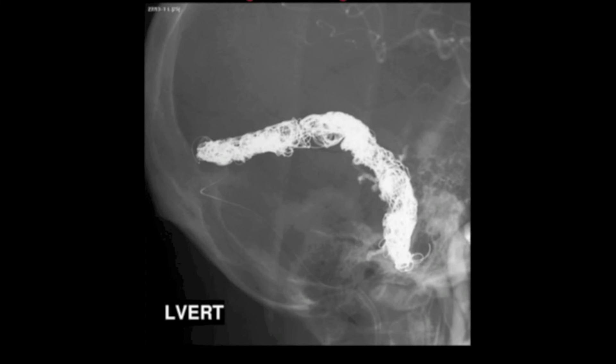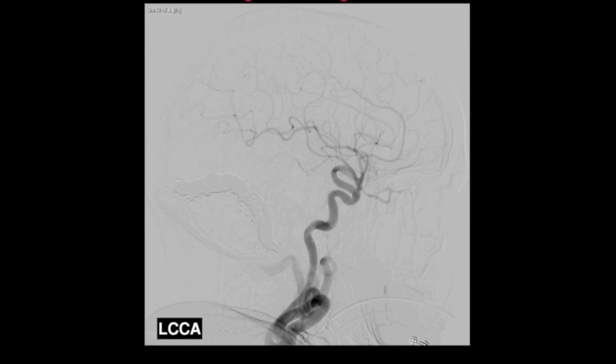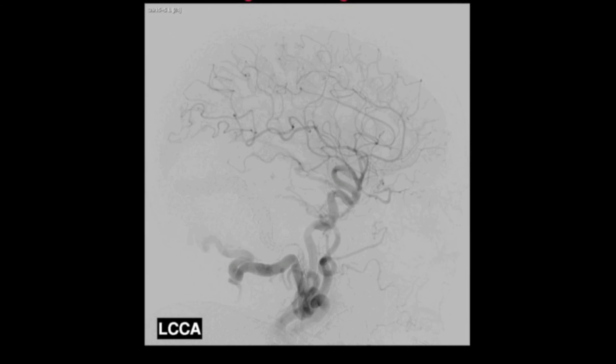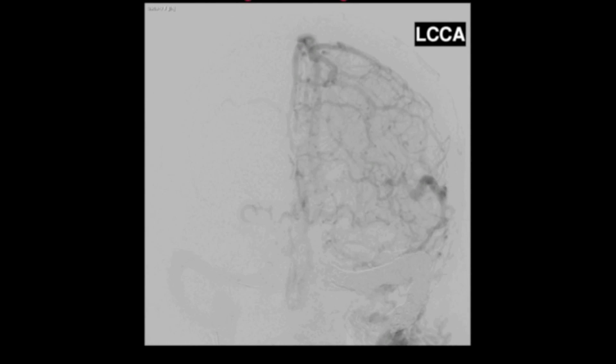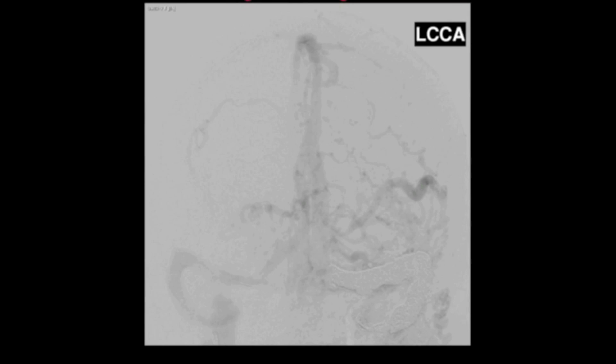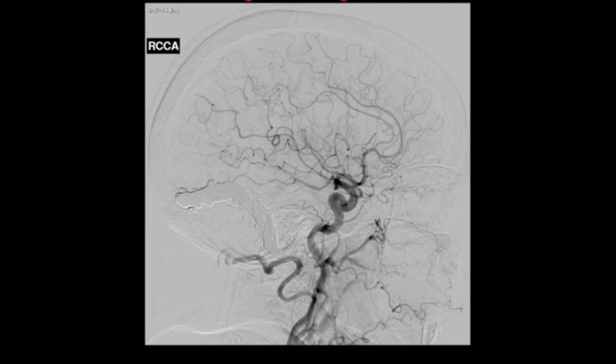Onyx embolization through the second microcatheter progressively occludes all fistula connections. Immediate post-procedural angiography demonstrates complete obliteration of the fistula and normal cortical venous drainage has been restored. The Towne's projection demonstrates how coil and Onyx embolization of the fistula up to the level of the torcula has completely obliterated the fistula's connections while preserving normal venous drainage. Note that abnormal feeders from the right internal and external carotid artery are also eliminated after embolization.